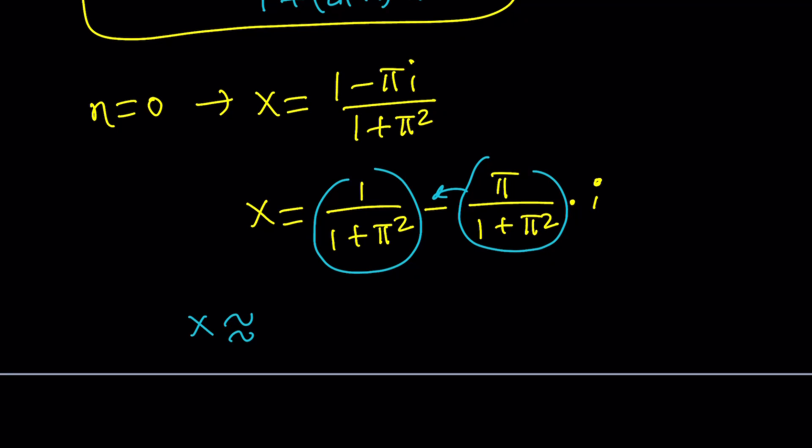Now how can we approximate this value? x is approximately based on this principal value or n equals 0, it's going to be approximately 0.0912 minus 0.289i. So that's what it looks like.